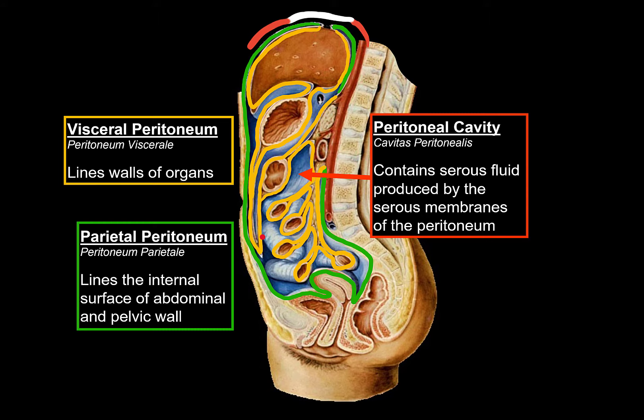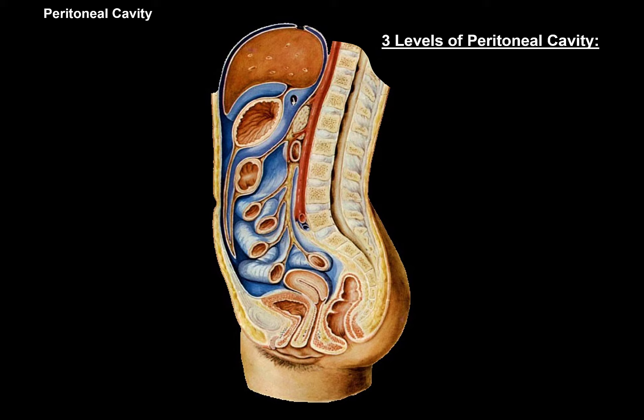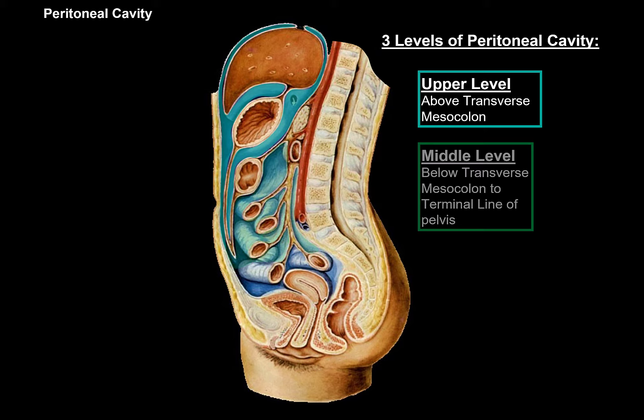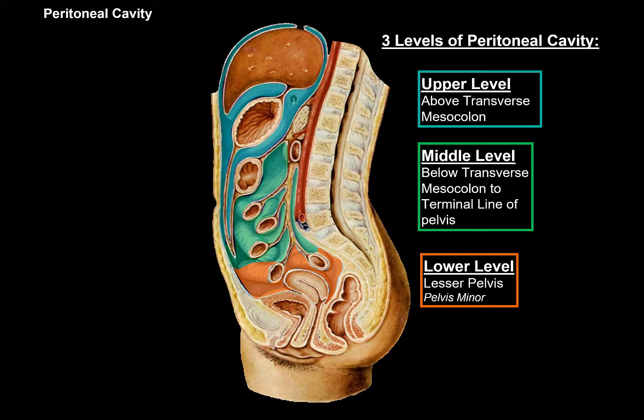The peritoneal cavity has three levels. The first is the upper level, above the transverse mesocolon. The middle level lies below the transverse mesocolon but above the terminal line of the pelvis. The lower level is under the terminal line, located within the lesser pelvis. We're going to go through some landmarks — small spaces and openings — specific to each of these levels, starting with the upper level.